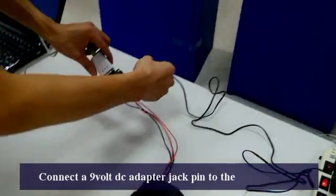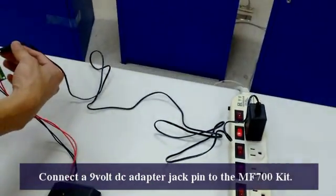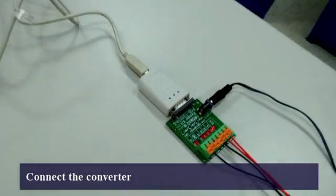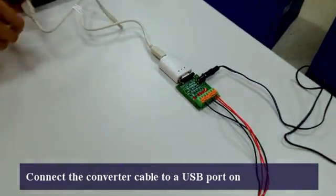Connect a 9V DC adapter jack pin to the MF700 Kit. Connect the converter cable to a USB port on the computer.